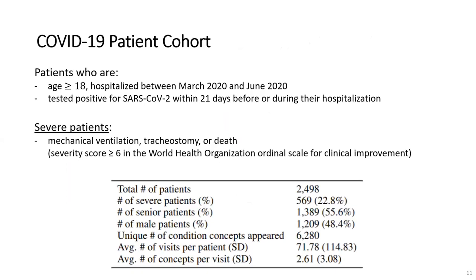The COVID-19 cohort used in the study was identified as patients 18 years or older who were hospitalized and tested positive for COVID-19 within 21 days before or during their hospitalization. Patients must also have had at least one visit record at Columbia University's medical center prior to March 1st, 2020. We obtained all historical condition concepts and demographic information prior to hospital admission due to COVID-19 infection. Severe patients were defined as those who experienced at least one of: mechanical ventilation, tracheostomy, or death during hospitalization, based on the WHO ordinal scale for clinical improvement.